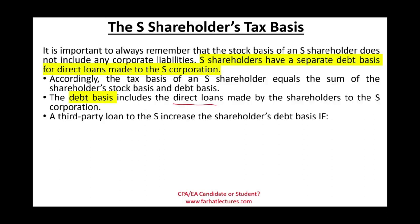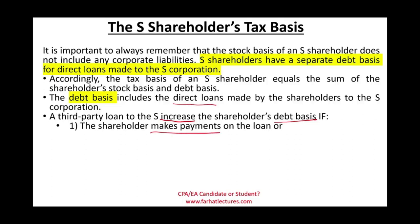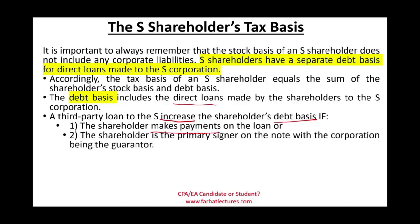What happens if there's a third-party loan made to the S corporation? A third-party loan — for example from a bank — does not automatically increase the shareholder's debt basis. However, if the shareholder makes payment on that loan, it becomes the shareholder's responsibility and will increase their debt basis. Alternatively, if the shareholder is the primary signatory on the note with the corporation being the guarantor, then a third-party loan to the S corp increases the shareholder's debt basis.